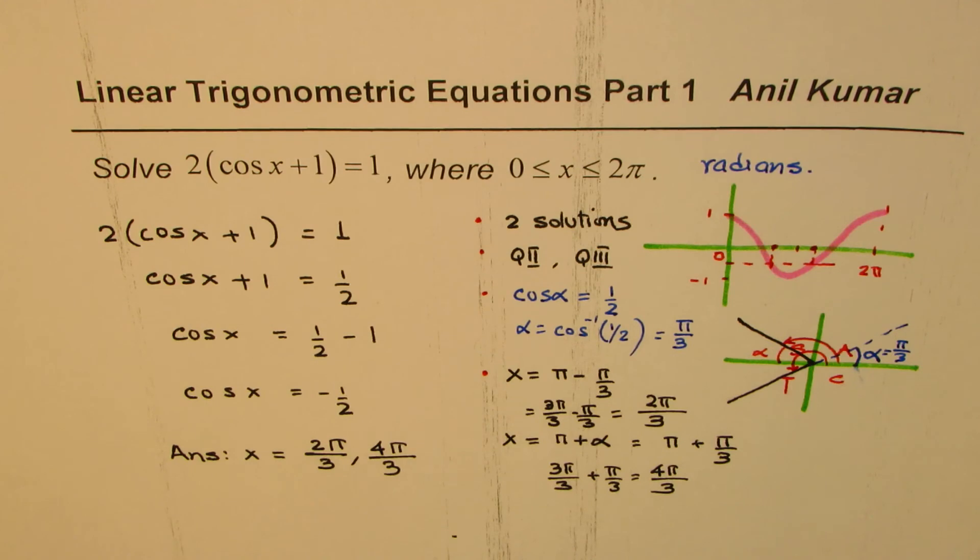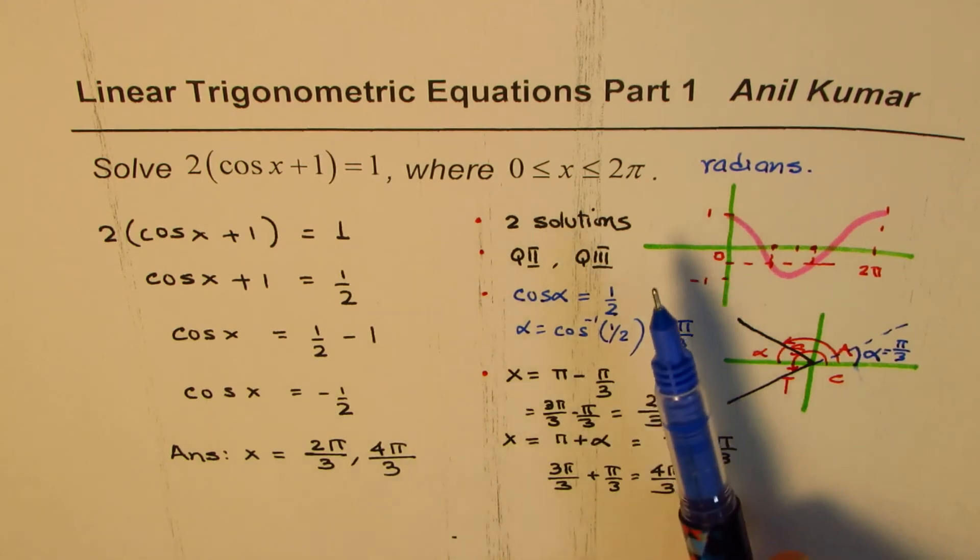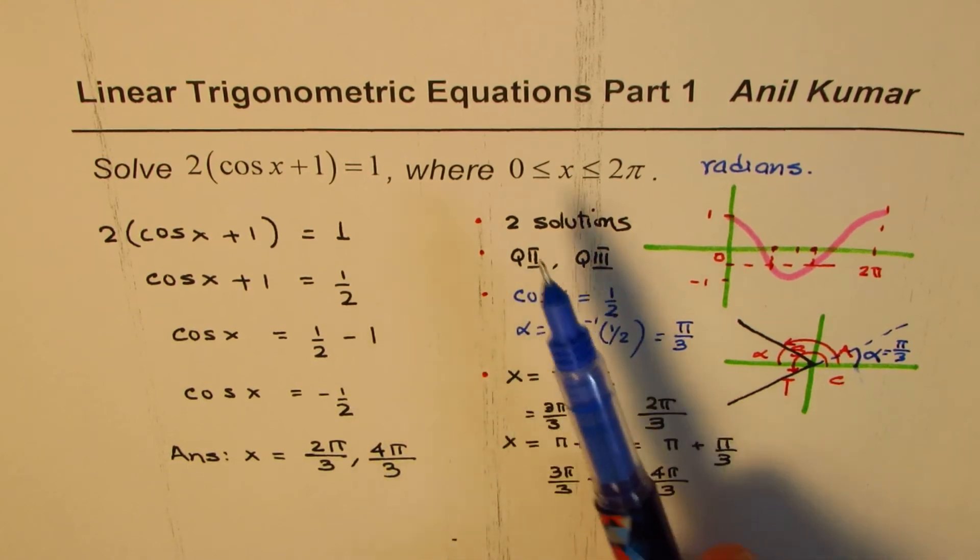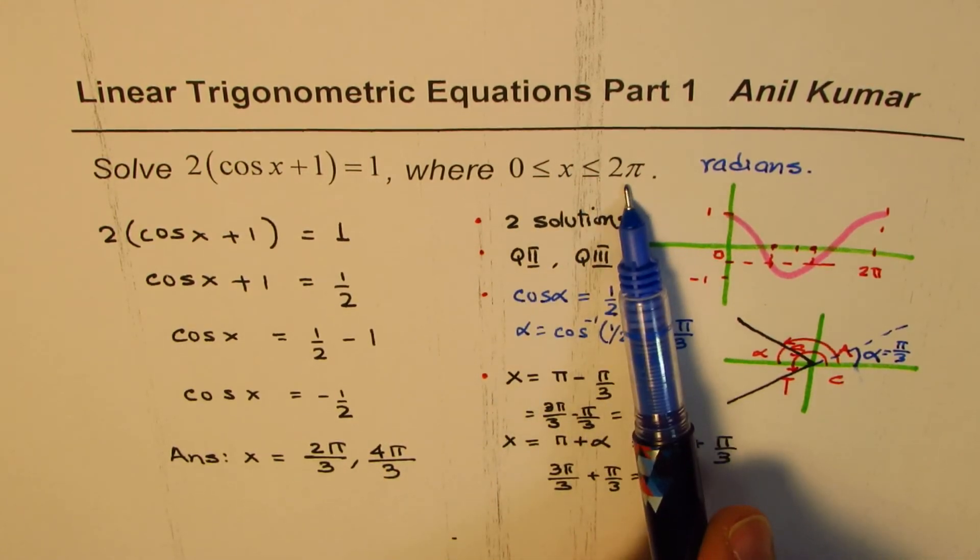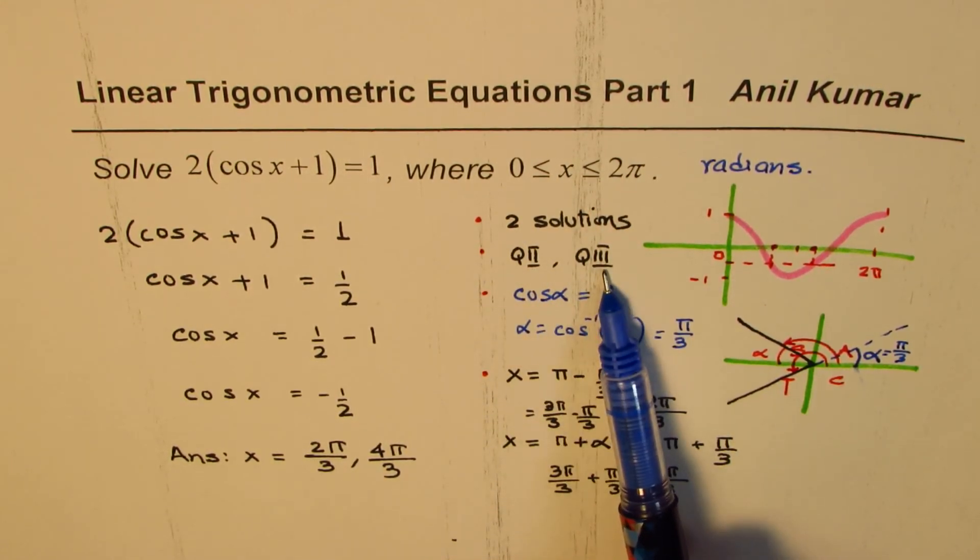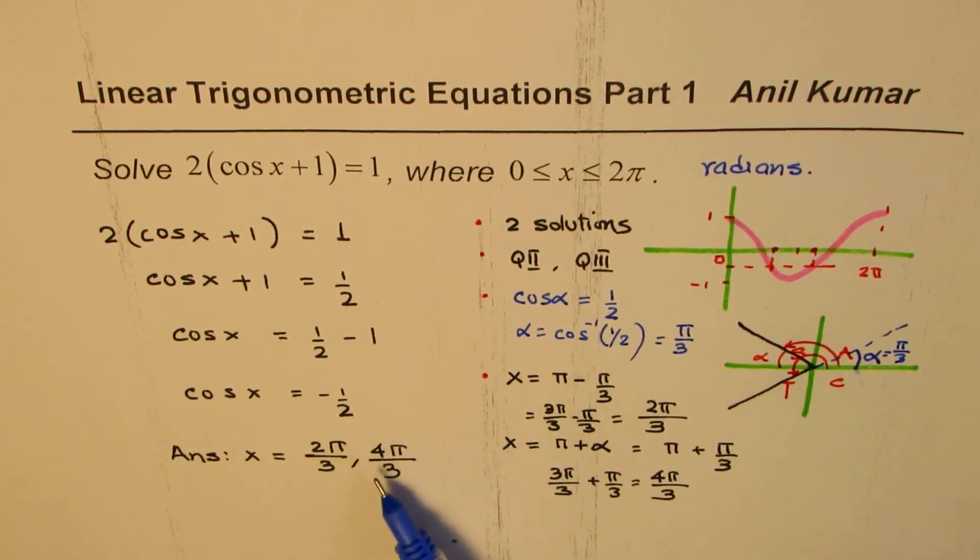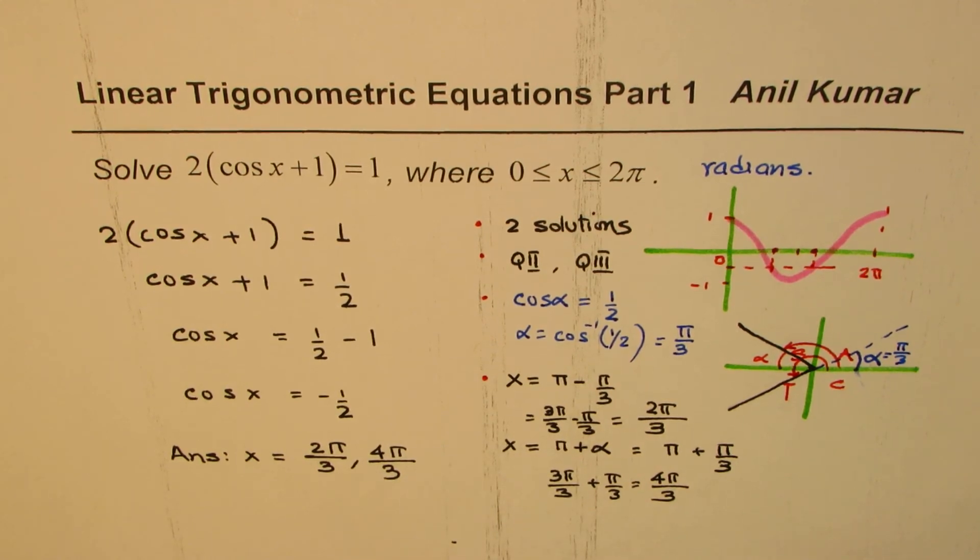So these are the steps involved to find solutions for a linear trigonometric equation. The steps are: first, get an idea of how many solutions we are looking for in the given domain and where they lie. Find the related acute angle first, and then find both the solutions.